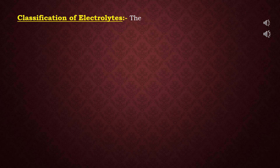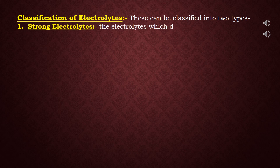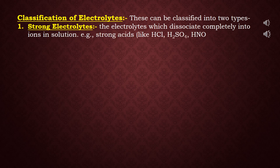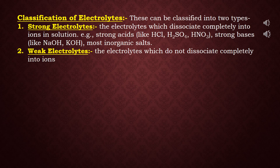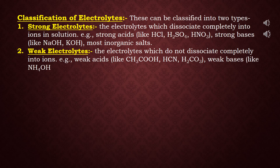In this chapter we mainly deal with electrolytes. Electrolytes can be classified into two types. First are strong electrolytes — those which dissociate completely into ions in solution. For example, strong acids like hydrochloric acid, sulfuric acid, nitric acid; strong bases like sodium hydroxide, potassium hydroxide; and most inorganic salts. Second are weak electrolytes — those which do not dissociate completely into ions. For example, weak acids like acetic acid, HCN, H₂CO₃ (carbonic acid), and weak bases like ammonium hydroxide, calcium hydroxide, etc.